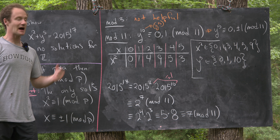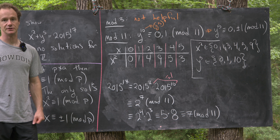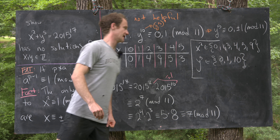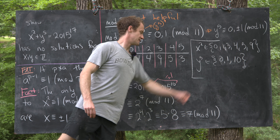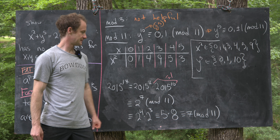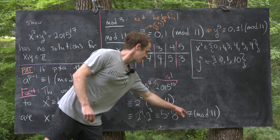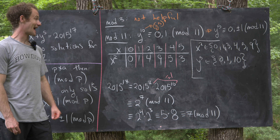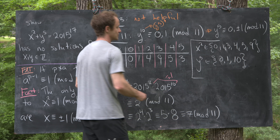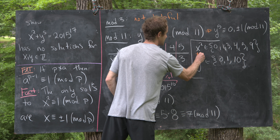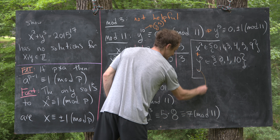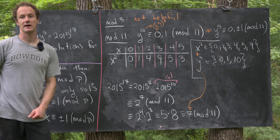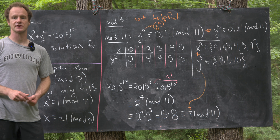Now what we try to do is add one element from the set of values of x squared and one element from the set of values of y to the 5th to get something congruent to 7 mod 11 — but we see that is impossible. There is no way to add these two together to get 7 mod 11. And that's a good place to stop.